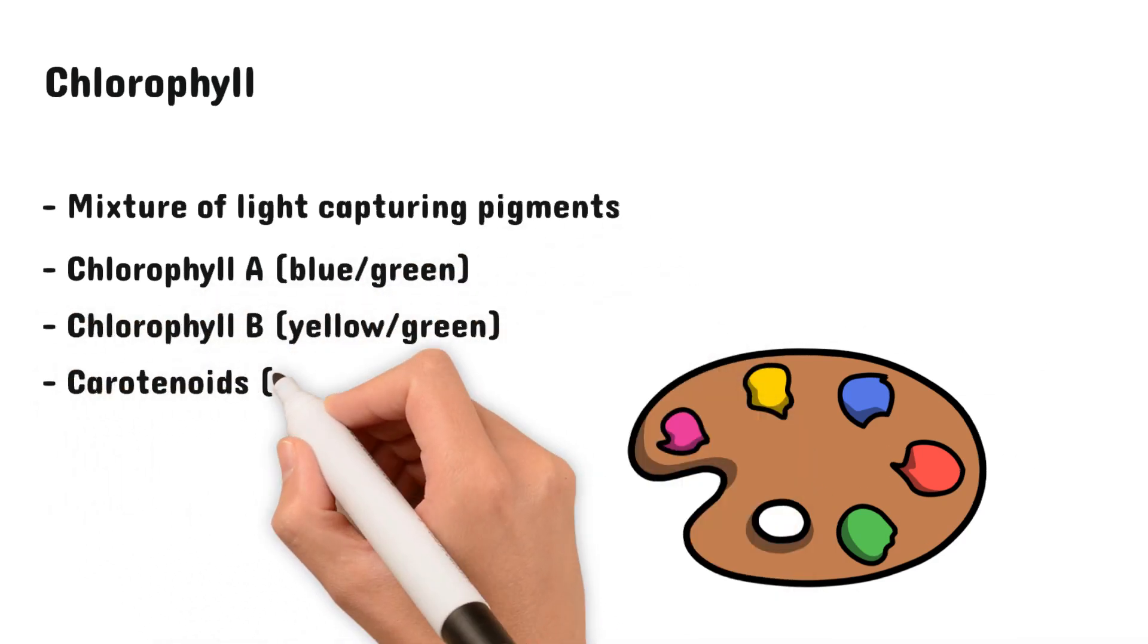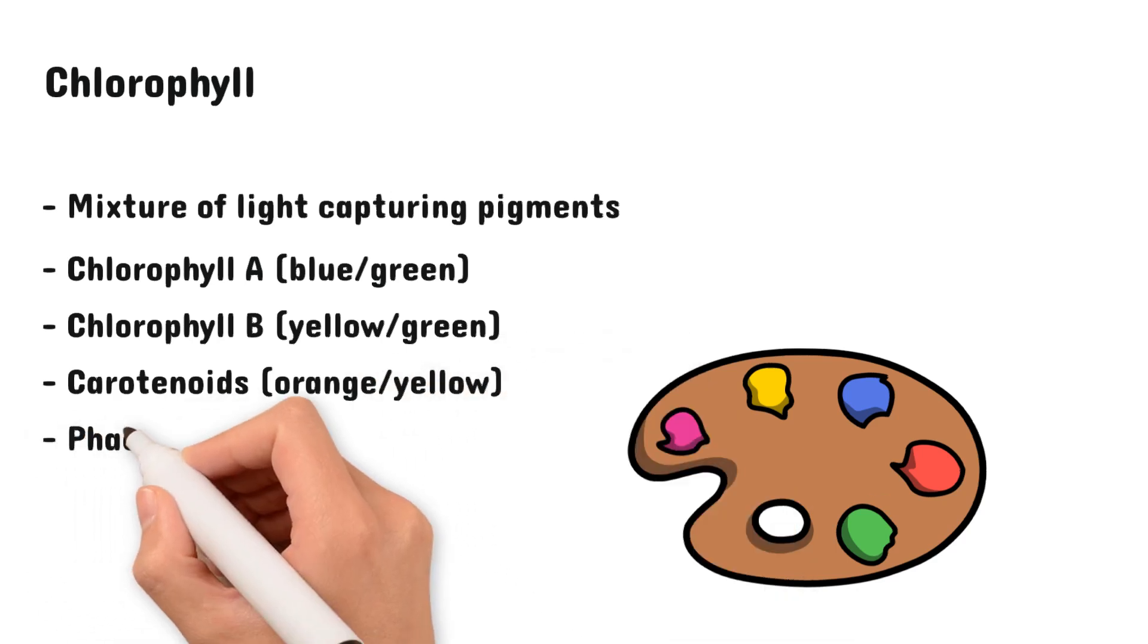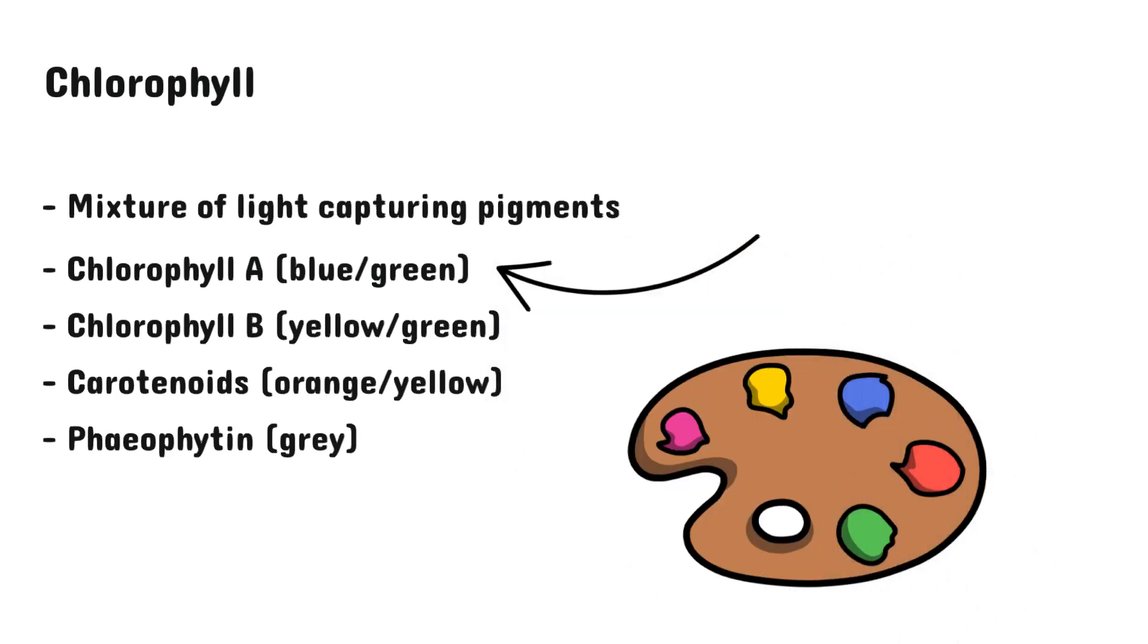There are also carotenoids, which are orange and yellow, and pheophytin, a gray pigment that is the breakdown of the other pigments. Now, chlorophyll a is found in all photosynthesizing plants and it is found in the highest quantity. That means there's more chlorophyll a than any other pigments.